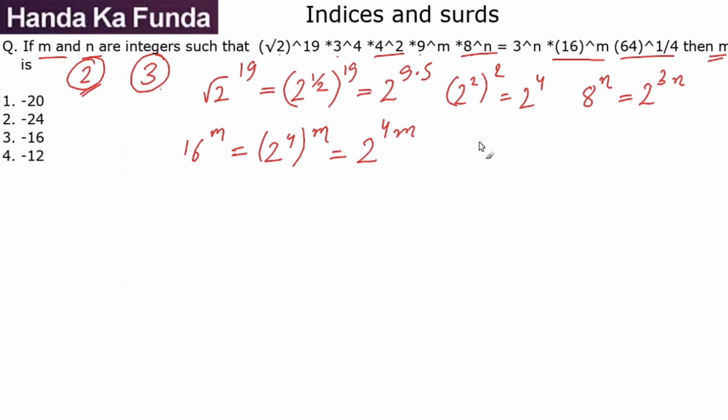And then I have 64 to the power of 1 by 4. 64 is 2 to the power of 6 to the power of 1 by 4, which will mean this is 2 to the power of 1.5. So I have now converted all the left-hand side terms in powers of 2. I have converted all the right-hand side terms in powers of 2.